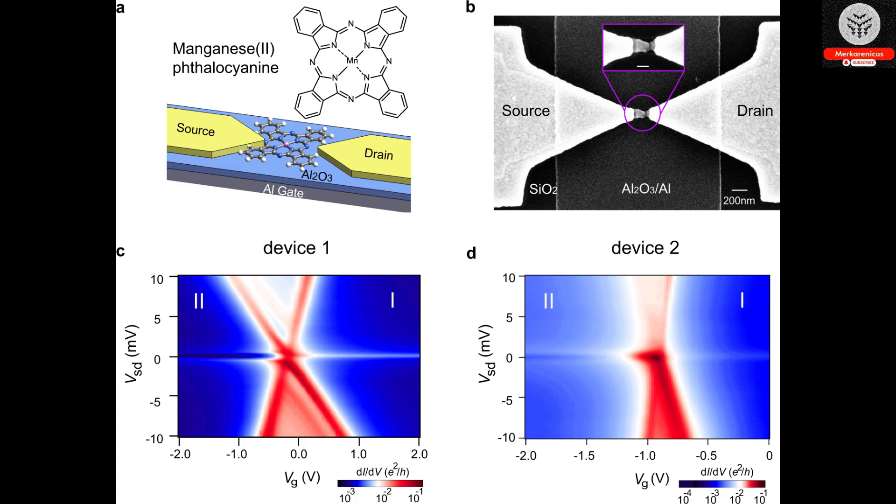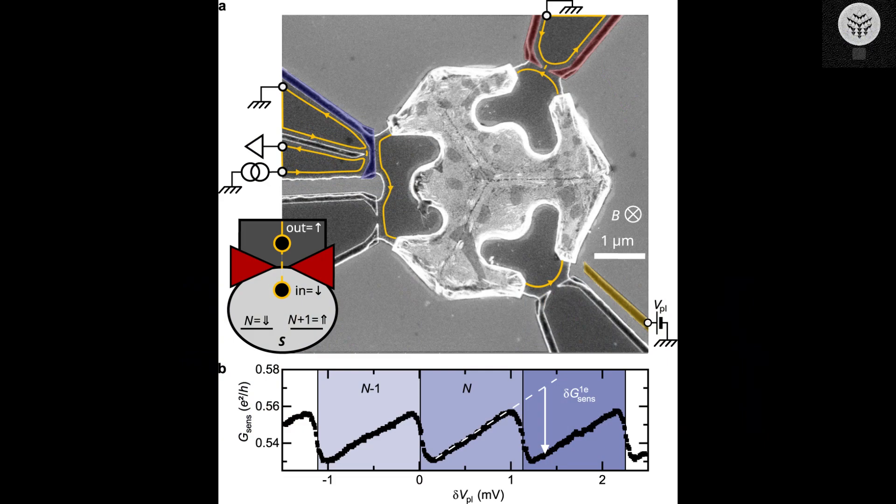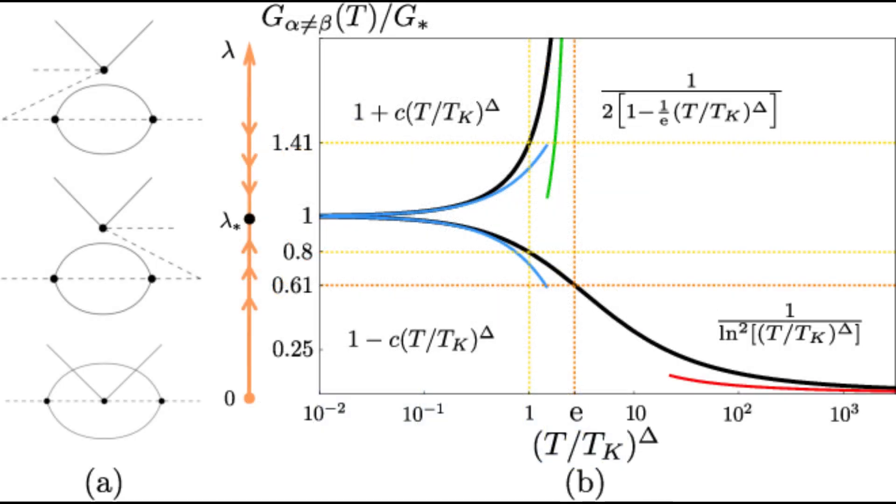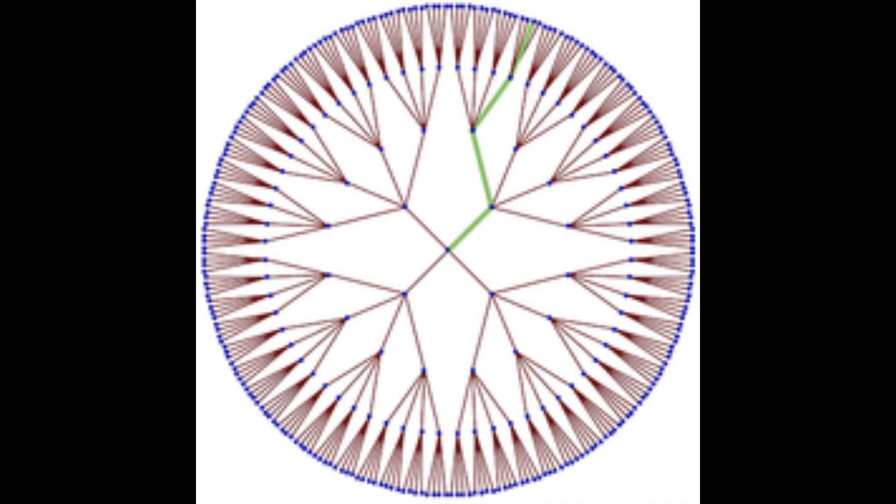Leveraging their newfound insights, the team put forth a proposal for a quantum device that could be experimentally tested to effectively manifest emergent particles, including the renowned Fibonacci Anyon.